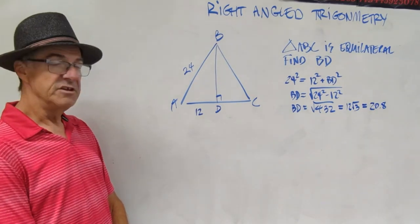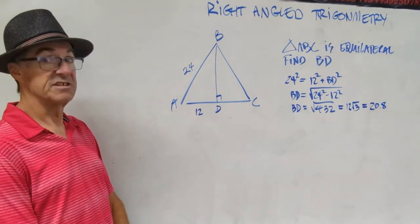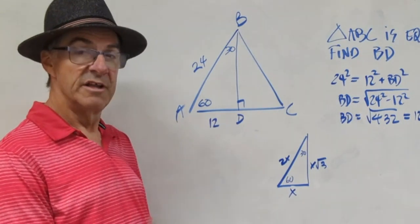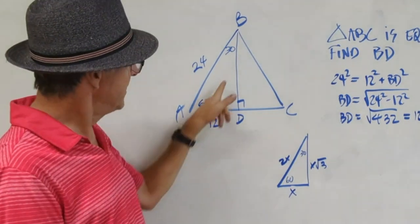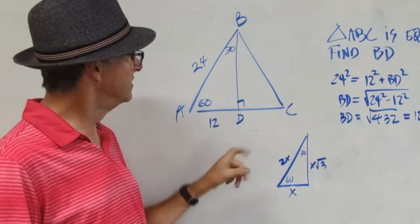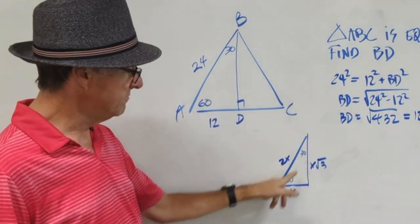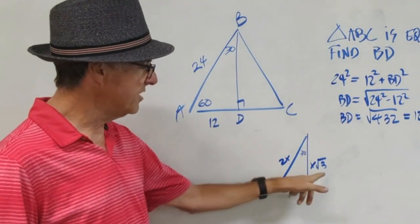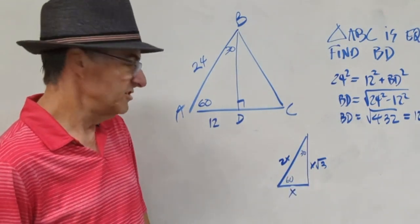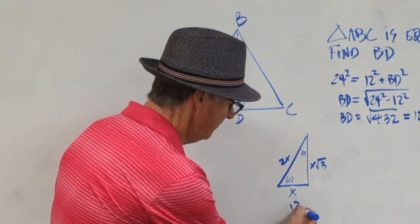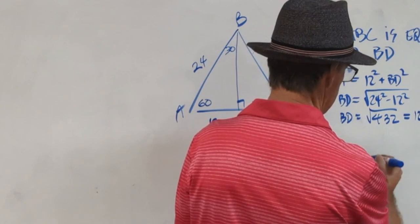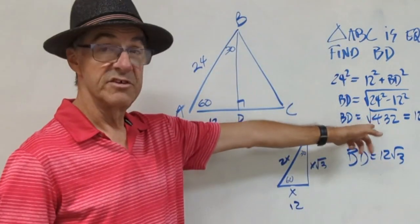Now pause the video and use what you know about 30-60-90 right triangles to find this length. I went ahead and labeled the 30 and 60 degree angles in this portion of our equilateral triangle. It's often really helpful with a more complicated figure to draw just the part you're looking at. I took this left-side right triangle, marked my degrees, and marked what I know about a 30-60-90: if that side is x, that's 2x and that's x times root 3. Since x is 12, this length is 12 times root 3. So BD equals 12 root 3 — the same answer we got using the Pythagorean theorem.